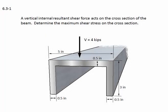Problem 6.3-1. A vertical internal resultant shear force acts on the cross section of the beam. Determine the maximum shear stress on the cross section. The cross section is a C-channel. The dimensions are given. Let's solve this problem.